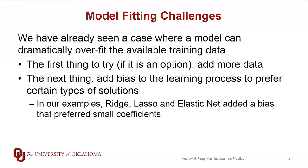Pulling out more training data is not always an option. Another approach is to add certain kinds of biases to the training process such that we prefer certain kinds of solutions over others — in particular, biases that try to enable models to generalize better to the rest of the population of possible samples. We've already played with examples of these in the form of ridge regression, lasso, and elastic net, all of which preferred model choices involving very small coefficients.